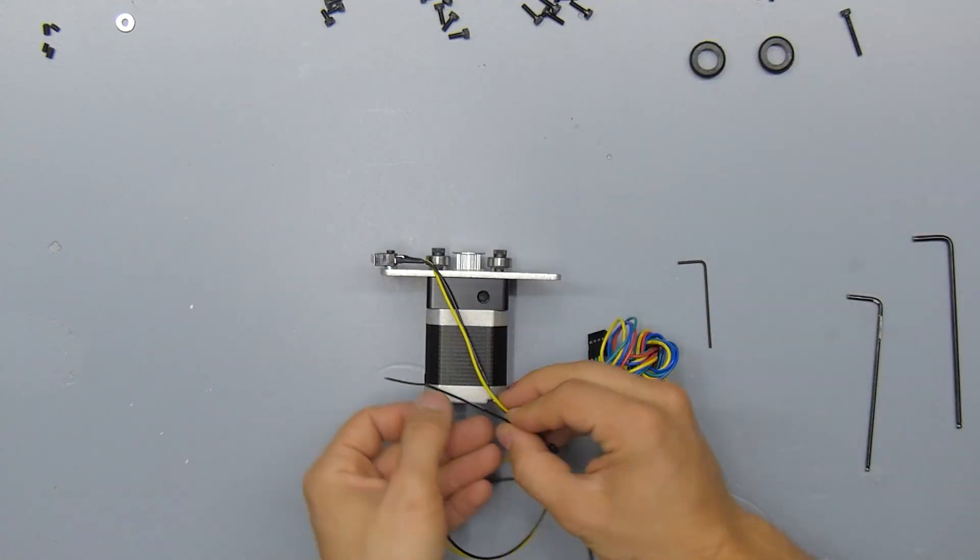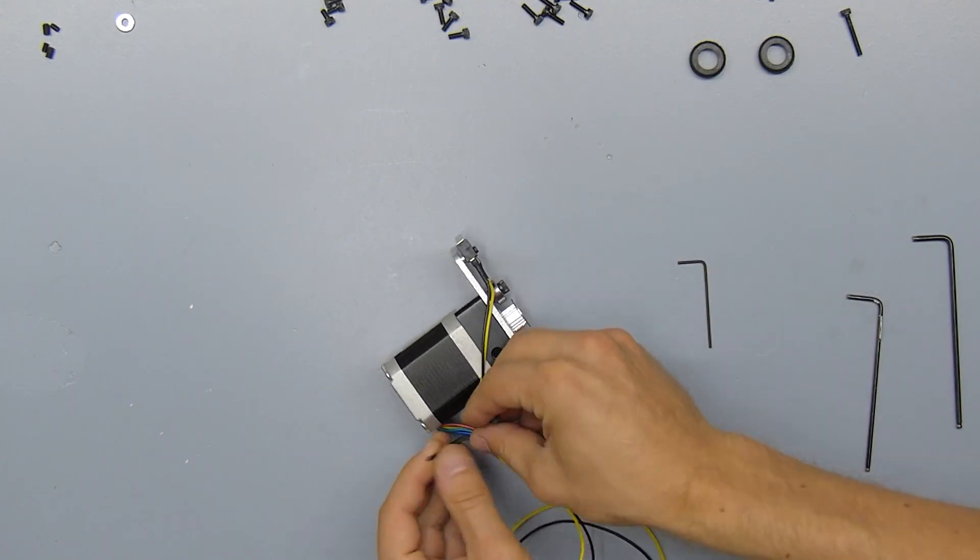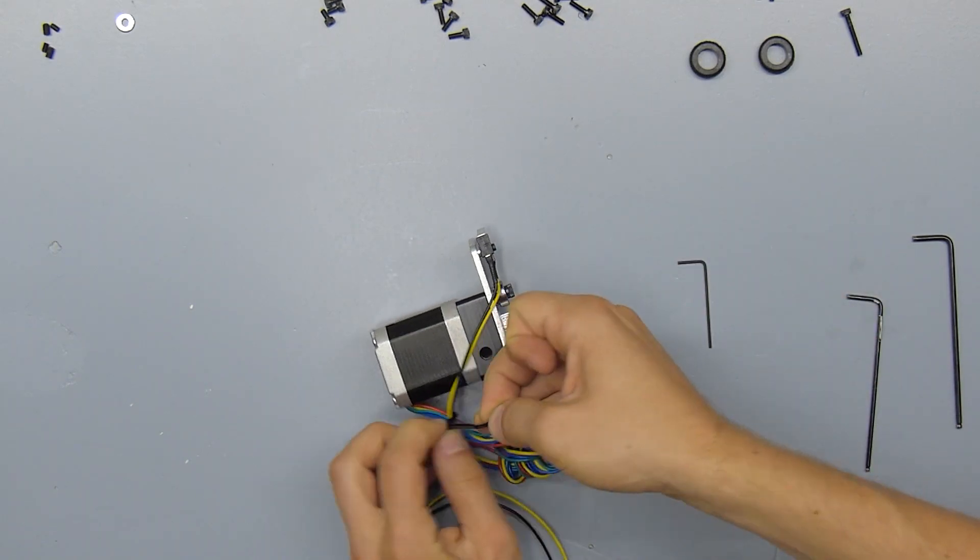We're simply going to attach this to the motor wires. Try and attach it in a way that neither of the wires are under tension.